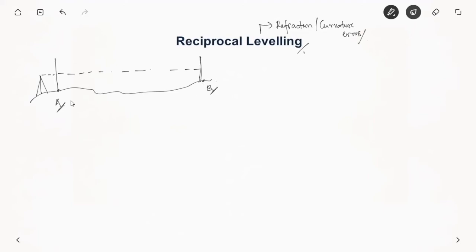So here whatever reading you note down on A, it won't have this refraction or curvature error because it will be very close by. But whereas this B, whatever reading you take on B, that will have error due to refraction and curvature.